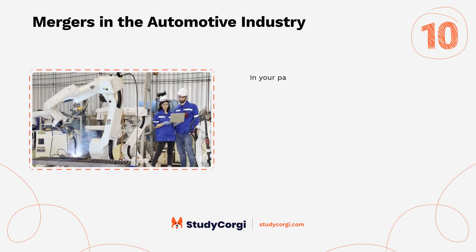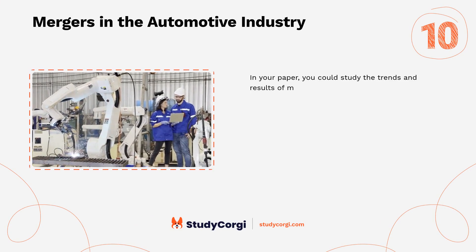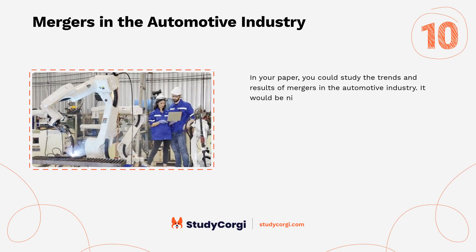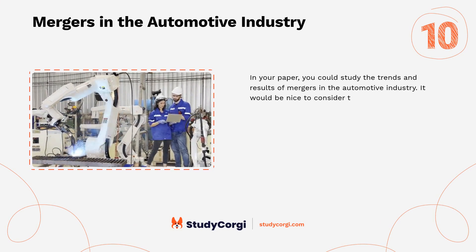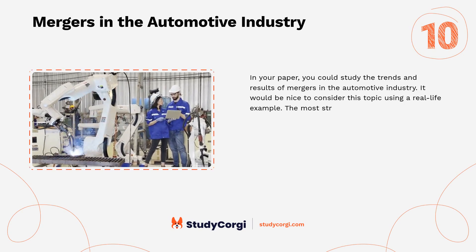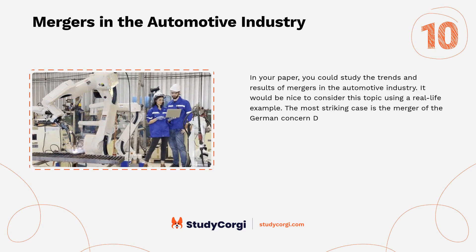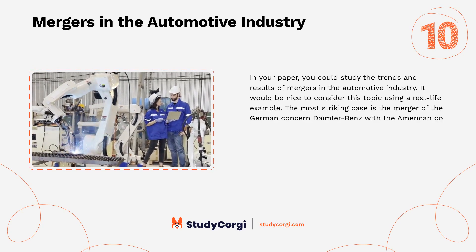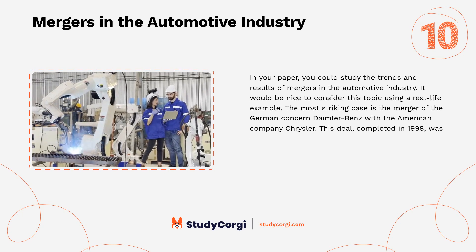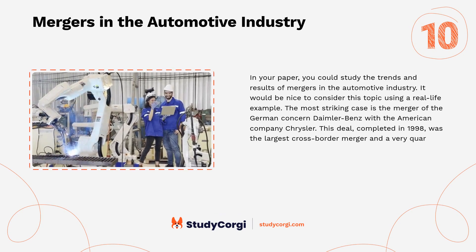Mergers in the automotive industry. In your paper, you could study the trends and results of mergers in the automotive industry. It would be nice to consider this topic using a real-life example. The most striking case is the merger of the German concern Daimler-Benz with the American company Chrysler. This deal, completed in 1998, was the largest cross-border merger and a very quarrelsome one.